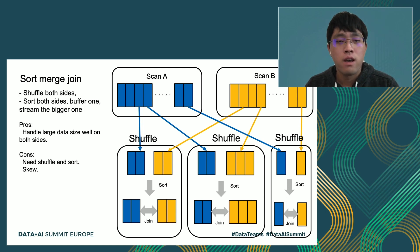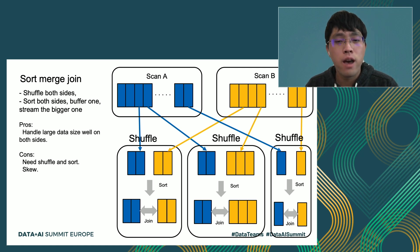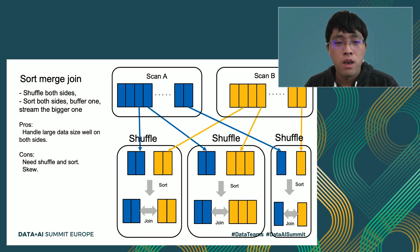Next is sort merge join. It first shuffles both sides A and B on the join key, and after shuffle, each task will do a local sort on both sides. Then a join is performed in a sort merge way. The pros of sort merge join are that it doesn't have any OOM issues and can handle large datasets well on both sides, so if you have two large tables to join, sort merge join is a good choice. The cons is that it needs shuffle and sort before the join, which can be inefficient and costly for large tables. The external sort can be expensive if the table is big and needs to spill out of memory. In addition, if join keys are skewed — for example, having a lot of nulls as join key — sort merge join can have data skew problems.